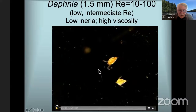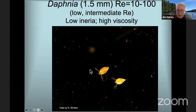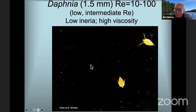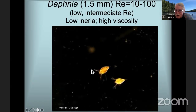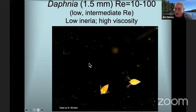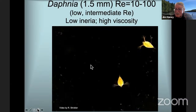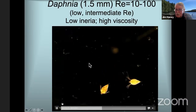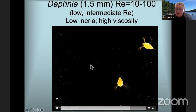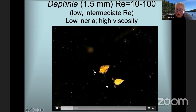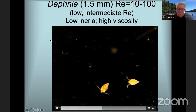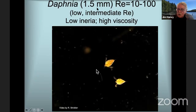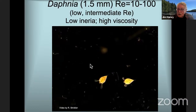Here's a video of some Daphnia. Notice that unlike us, whenever they stroke there's almost no inertia — they hardly move forward unless they're actually moving their antennae. They stroke, move, then stop, because they're in this molasses-like world. But this also allows them to do things like capture bacteria that we can't. This is the world of zooplankton: low Reynolds number, low inertia, high viscosity.